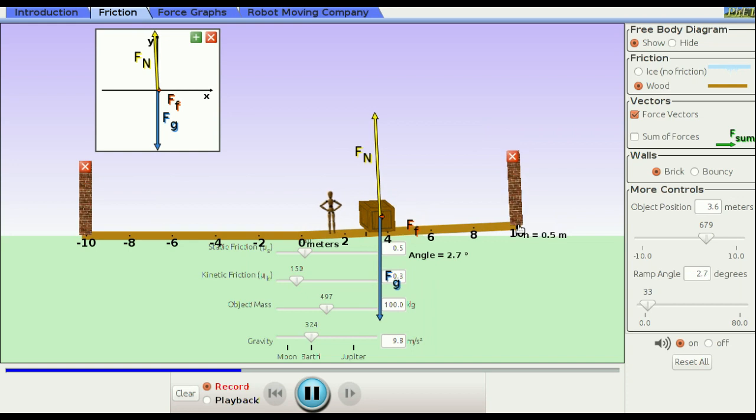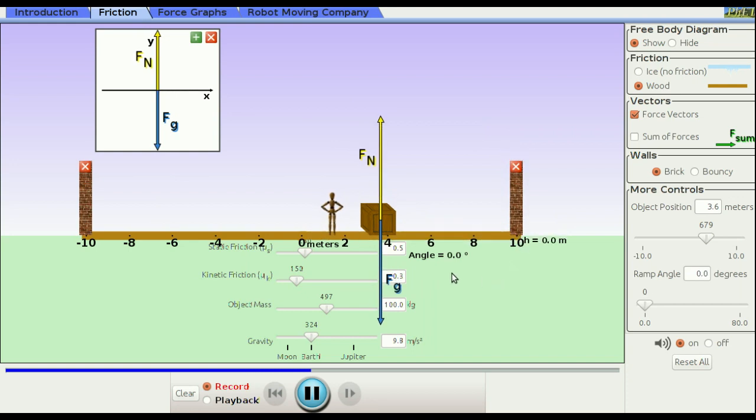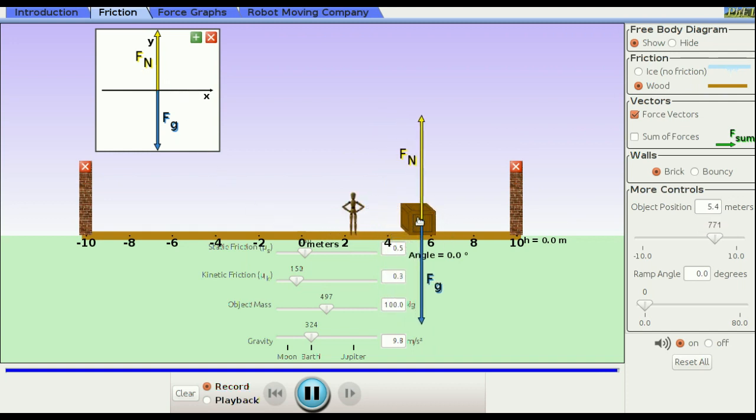And now, just to simplify things a little, I'm going to lower the ramp down to a zero degree angle, and I'm going to push, and watch. The frictional force is increasing to directly compensate. But, there, the box started to slide.